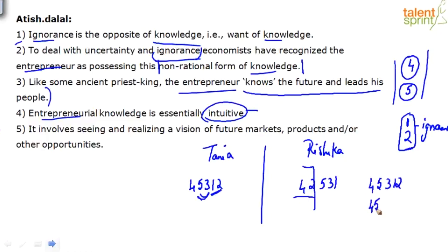Four, five, three, one, two is what Tanya says, but I'm leaning more towards four, five, one, two, three. Sentence three says economists have recognized that the entrepreneur possesses this non-rational form of knowledge, and because of that — like some ancient priest-king — he knows the future and leads his people. So sentence three is reiterating why economists recognize entrepreneurs as possessing this non-rational form of knowledge.